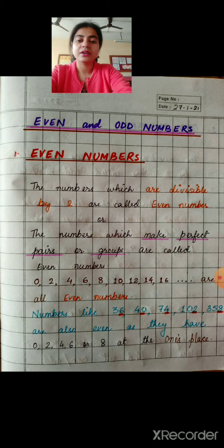So, it doesn't matter if a number is a single digit, double digit, three digit, four digit number. We have to check the number at the once place or the last number to find out whether it is an even number. If it has 0, 2, 4, 6 or 8 at the once place, अगर किसी भी बड़े नंबर के once place पर, यानि कि वो last number 0, 2, 4, 6 या 8 है, तो वो पूरा नंबर ही even number है.